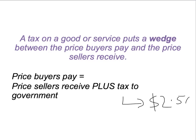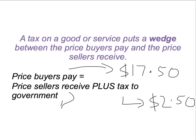Our equilibrium has involved buyers paying a price of $17.50 for the pizza. $2.50 of that goes to the government, which means that the amount that sellers receive is $17.50 less $2.50 — that's $15 to the seller.